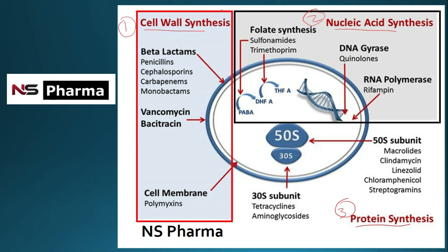Cell wall synthesis inhibitors include beta-lactams — which include penicillins, cephalosporins, carbapenems, and monobactams — along with vancomycin and bacitracin, which also inhibit cell wall synthesis.